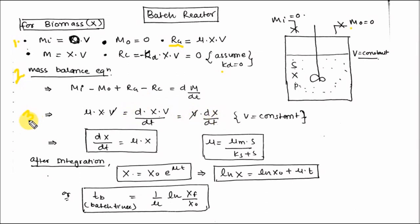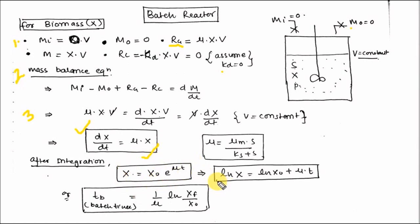The third step is to divide the whole equation by V. You will get dX/dt equal to Mu·X, which matches what was discussed in growth kinetics. After taking integration you get X equal to X₀ into e to the power Mu·t. Taking the log gives ln X equal to ln X₀ plus Mu·t, where Mu equals Mu_max times S divided by (Ks plus S) — that is the Monod equation.